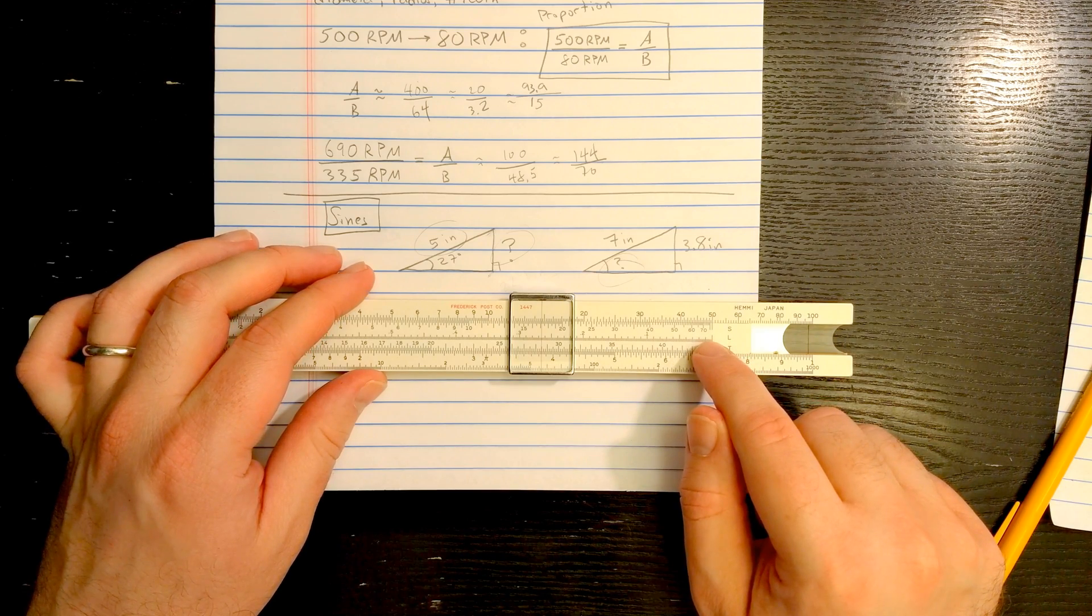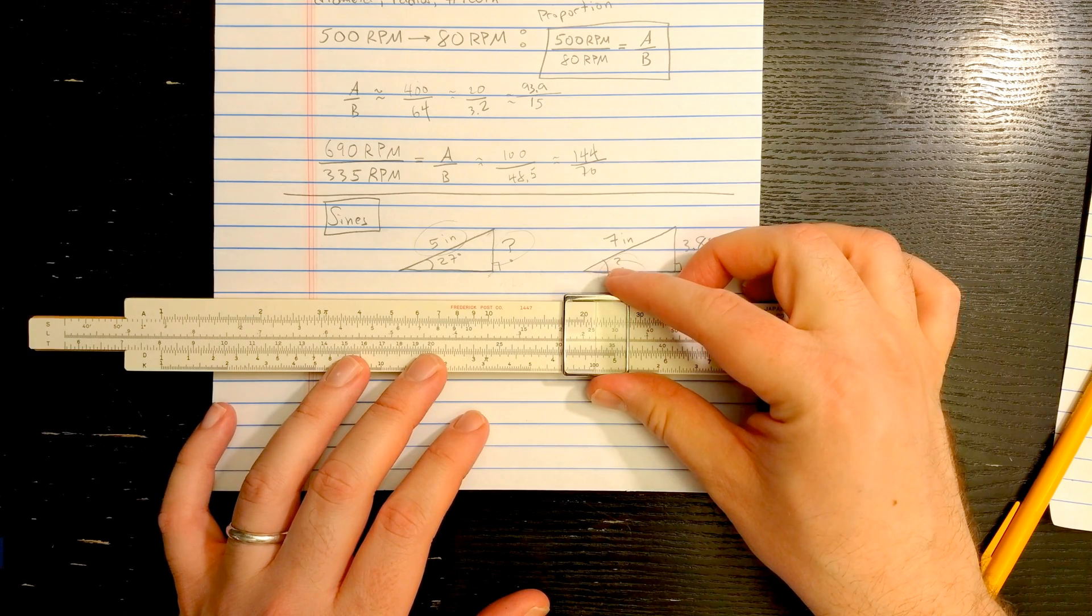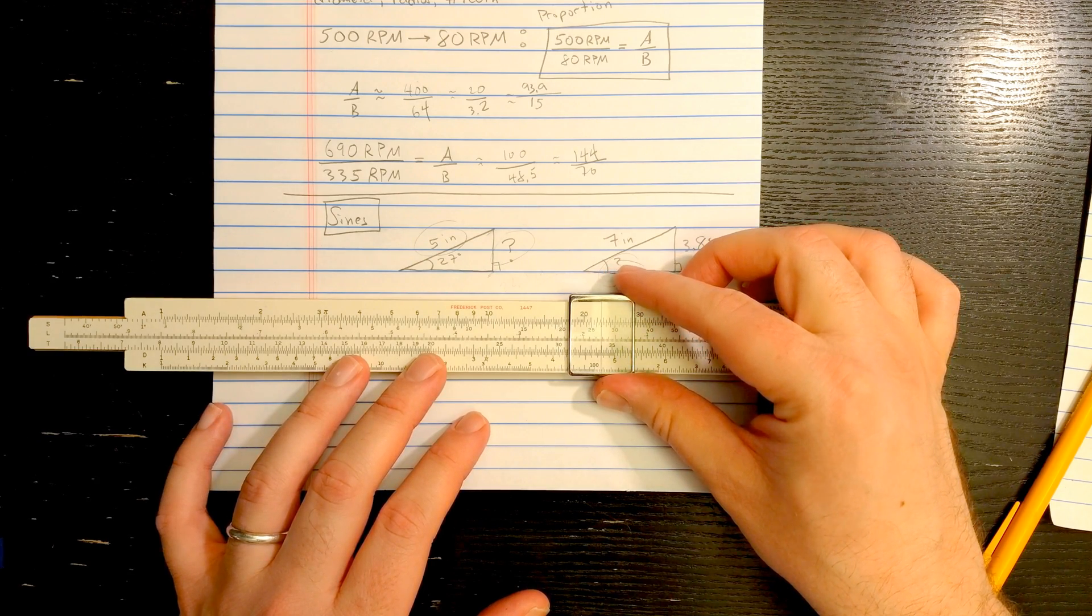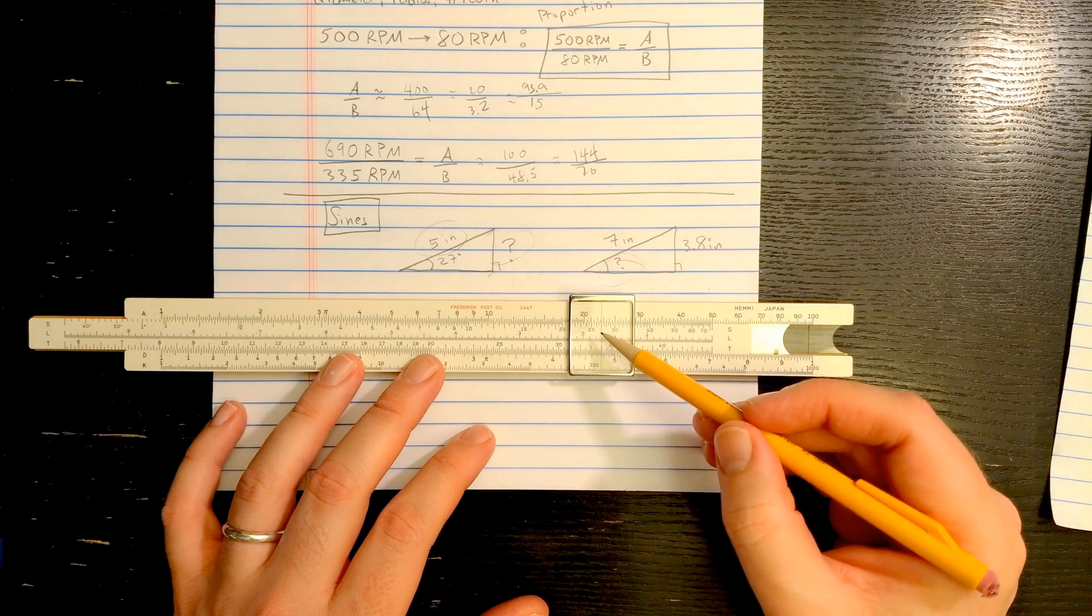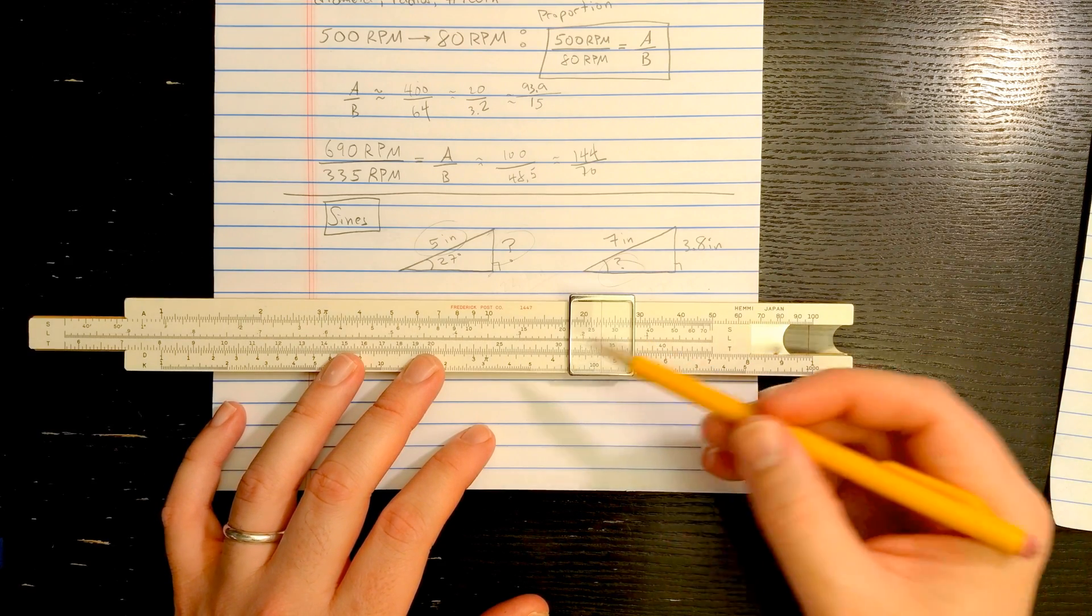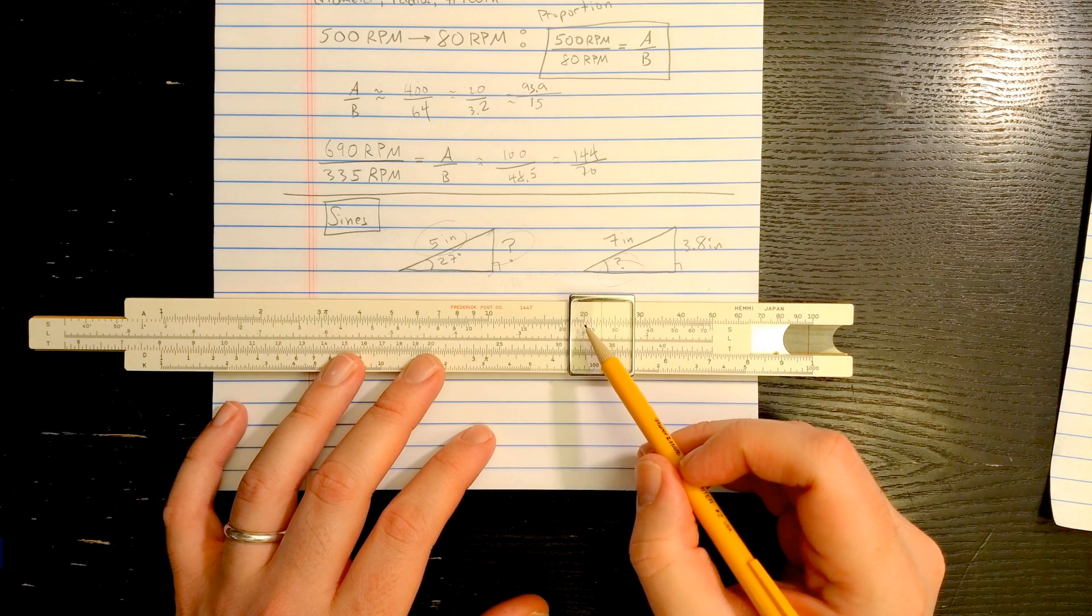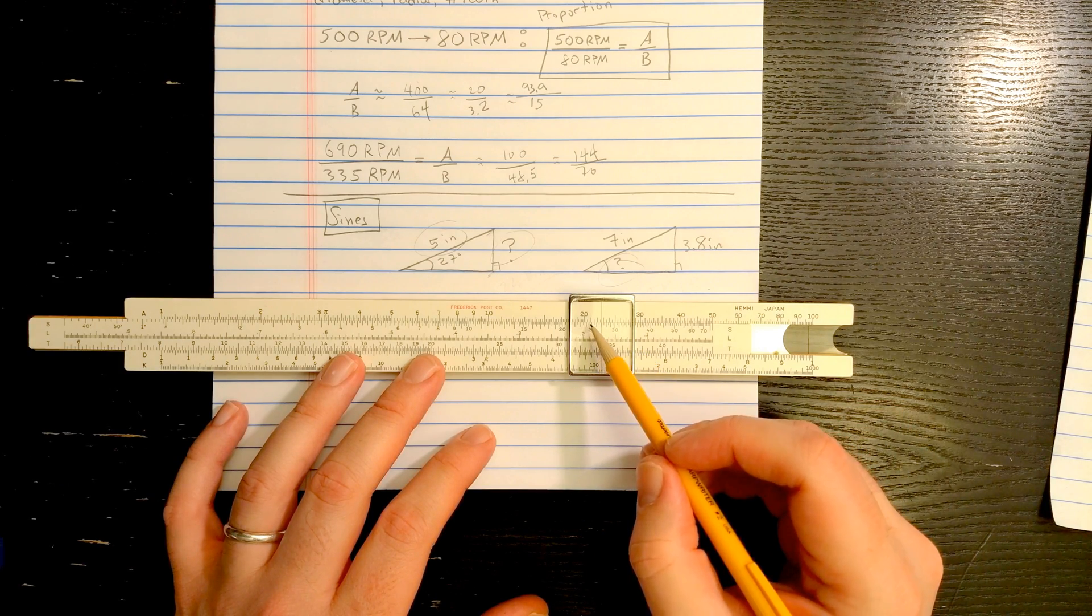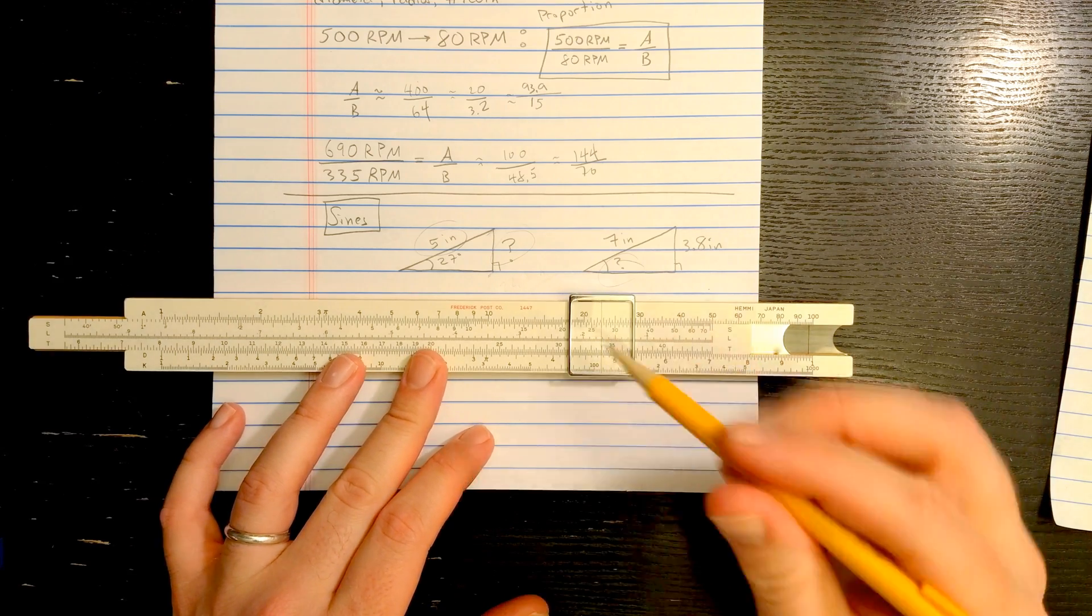So then all I need to do here is go to the 27 on the S scale. So there's 25 degrees, 26 degrees, 27 degrees. Okay, if you set hypotenuse here, when you go out to the other angle, the length of that other side you're looking for just reads on A. So here on A I have 2, sorry, 2.1, 2.2, looks like about 2.27.